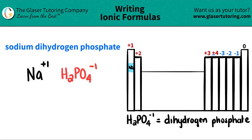Now, since we have the charges of each component, all we have to do is crisscross them to determine how many of each we have. So this plus one crisscrosses down telling me that I only need one dihydrogen phosphate. And this negative one crisscrosses down telling me that I only need one sodium. When you crisscross, the charges kind of vanish — it's more of a counting number.